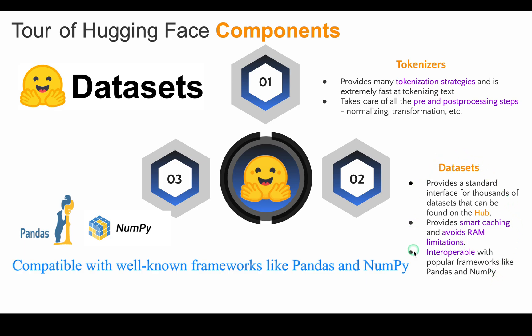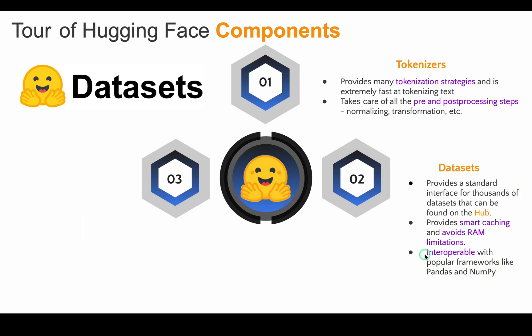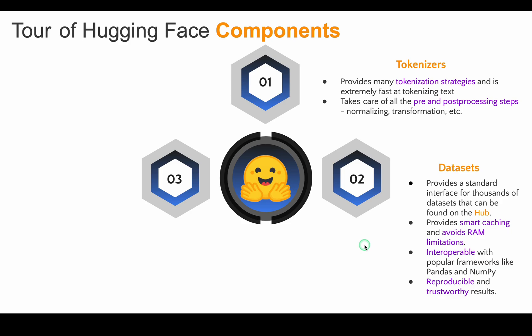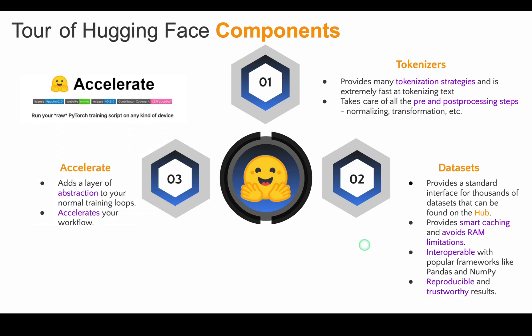Hugging Face Datasets helps make experiments more reproducible and results more trustworthy. If you ever had to create your own PyTorch training script, you likely had difficulties trying to migrate the code from your laptop to the cluster at your company. Accelerate adds a layer of abstraction to your usual training loops that takes care of all the specialized code necessary for training infrastructure, quickening your productivity by making it simpler to switch out infrastructure as necessary.